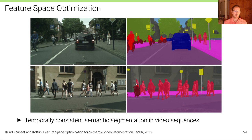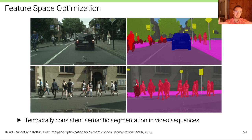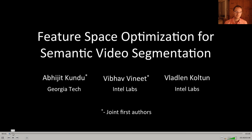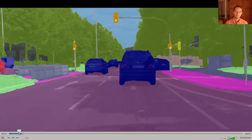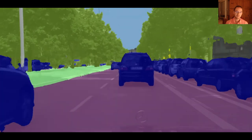There is also work where semantic segmentation is made temporally consistent. Applying a segmentation algorithm independently to each frame produces flickering artifacts and noise. This model optimizes for temporal consistency as well, and the results, even from 2016, are really impressive.